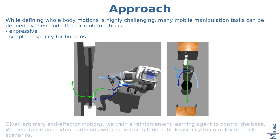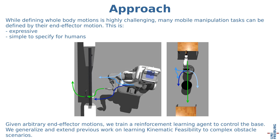Given arbitrary end-effector motions, we train a reinforcement learning agent to control the base of the robot. We then generalize and extend previous work on learning kinematic feasibility to complex obstacle scenarios.